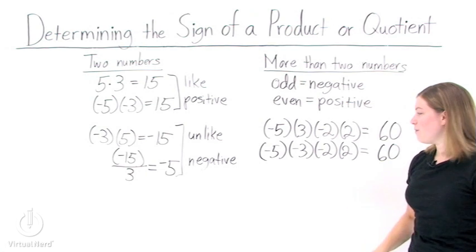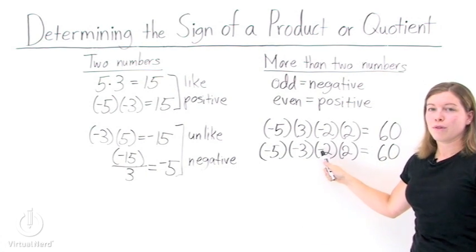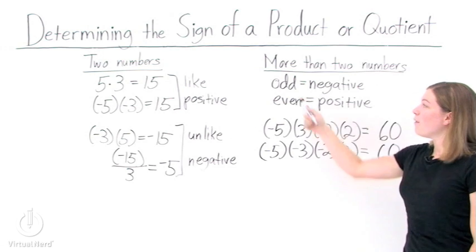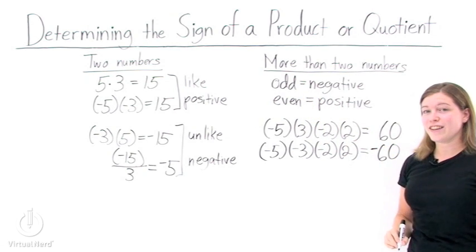But what about our signs? One, two, three. Three. That's an odd number. Odd. That means our answer's going to be negative 60.